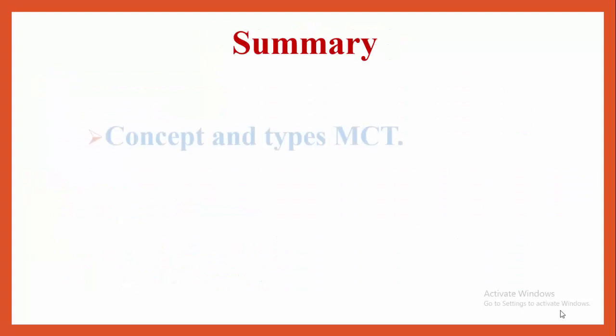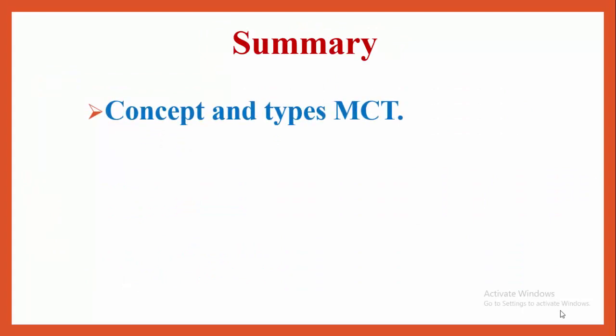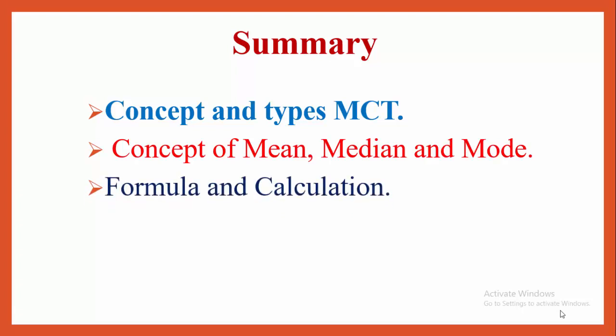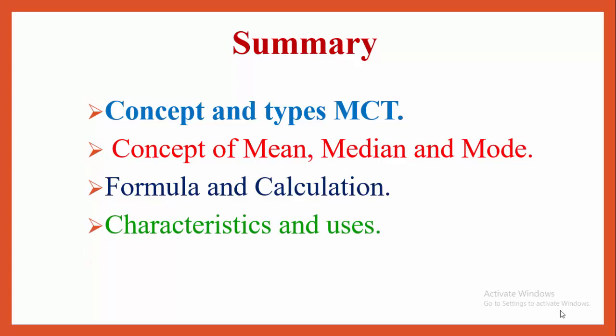Summary of this presentation video: we saw the concept and types of measures of central tendency in detail — concept of mean, median and mode, their formulas and calculation when raw scores (ungrouped data) are given, and their characteristics and uses in detail.